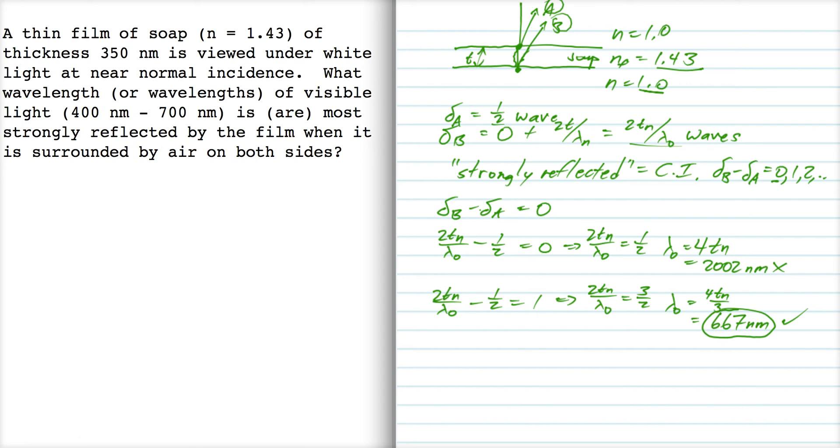Let's keep going and see if we can find any other solutions. So we're going to go to two t over lambda-naught minus a half is equal to two, which gives us two t over lambda-naught is equal to five halves.